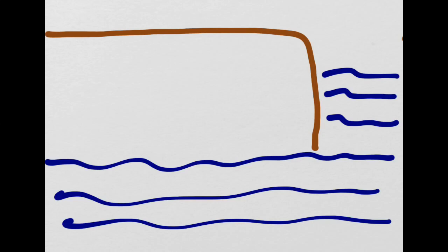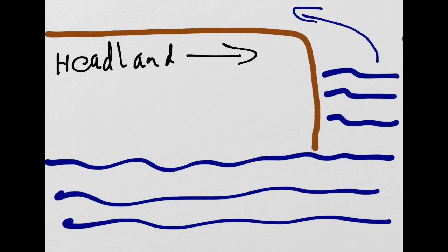On the screen you can see diagram 1. This brown area represents a headland which is sticking out in the sea in this direction here. The blue lines obviously represent the sea and this sea flows around the headland on both sides.